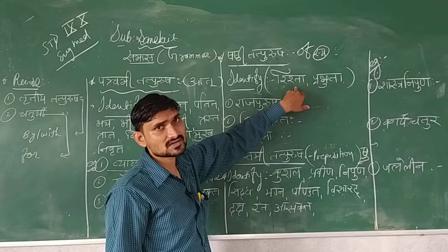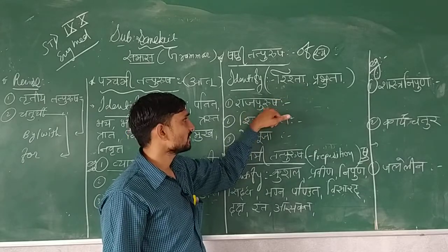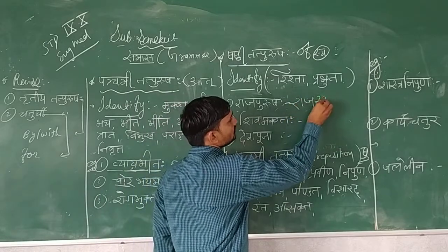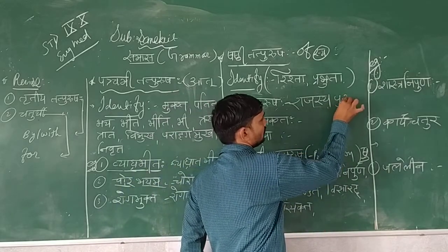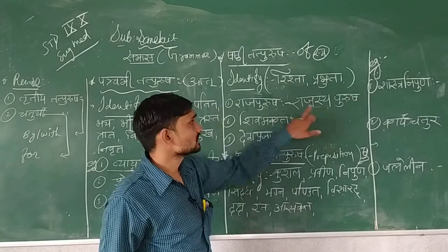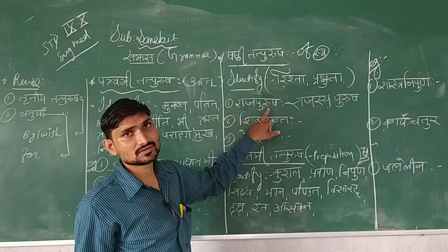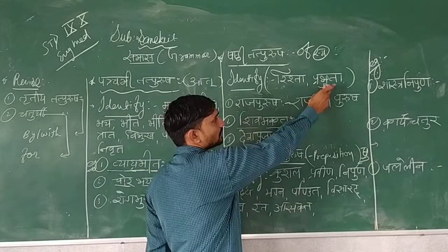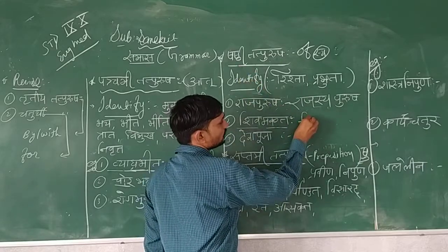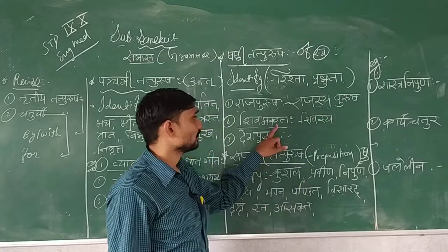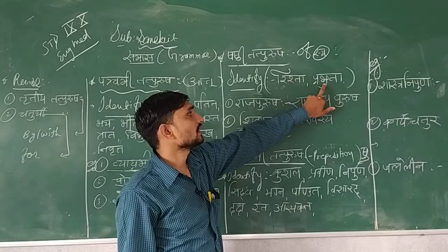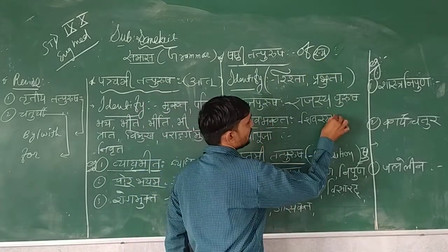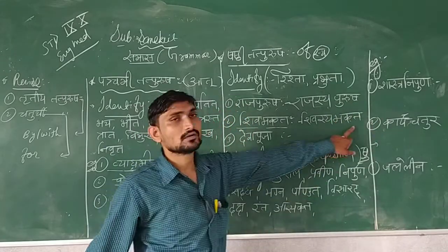Rajapurusha is a relationship word — Rajashya Purusha, meaning 'man of the king.' Here we use the Shya case form. Next, Shivabhakta — here the word Bhakta means devotion, so it is Prabhuta and known as Shashthi Tatpurusha. To split: Shivashya Bhakta. Another example, Devapuja — here also there is a relation and devotion. Deva changes to Devashya in singular form, so it becomes Devashya Puja. This way we can split words in Shashthi Tatpurusha.